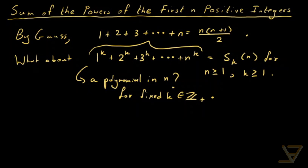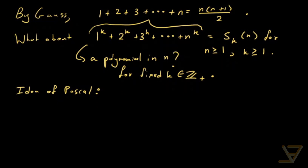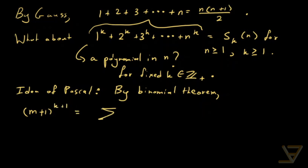It will turn out yes — we can write it as a polynomial. We're going to be using an idea of Pascal, and what he said is: use the binomial theorem. By the binomial theorem, we get — this is sort of a lemma — that (m plus 1) to the k plus 1 is equal to the sum from t equals 0 to k plus 1, with coefficients (k+1 choose t) times m to the t.